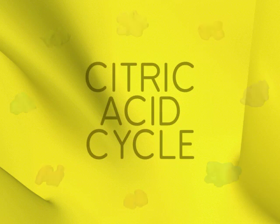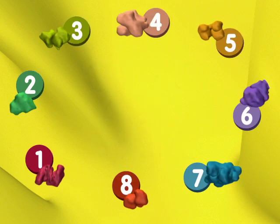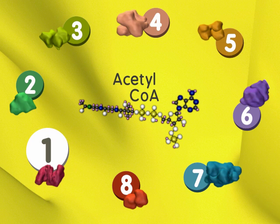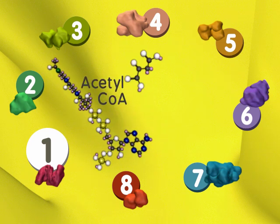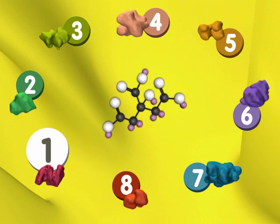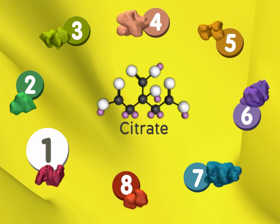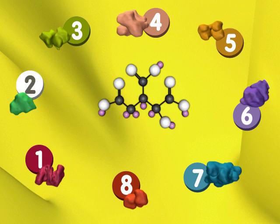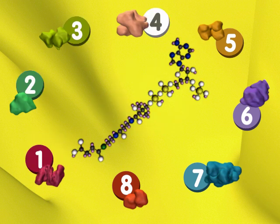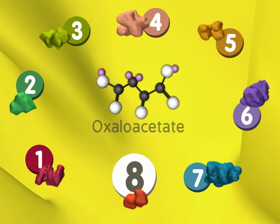In the first step of the cycle, a two-carbon molecule and a four-carbon molecule are combined to form a six-carbon molecule. That six-carbon molecule undergoes multiple biochemical changes during the cycle, and at the end, the original four-carbon molecule is produced.